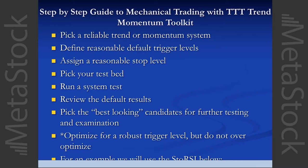To use the Trend Momentum Toolkit effectively: pick a reliable trend or momentum system — I suggest using both. Define reasonable default trigger levels, which are already set for you — you can use the system right out of the box. There's a reasonable stop level; I use 8 or 10%. Then pick your test bed, run the system test, review the results, and pick the best-looking candidates. If you're going to optimize, just be cautious — I'm not a big believer in a lot of optimization.